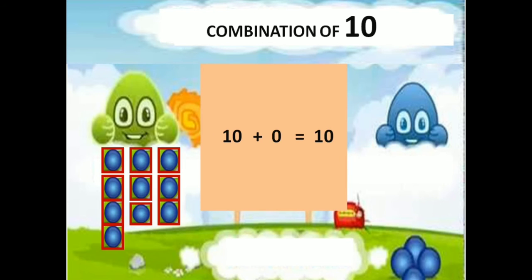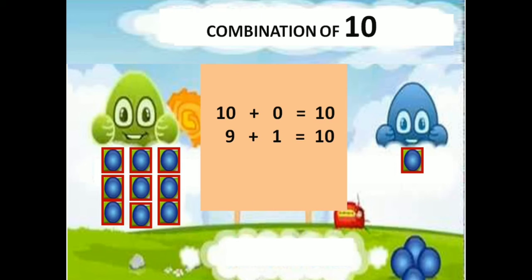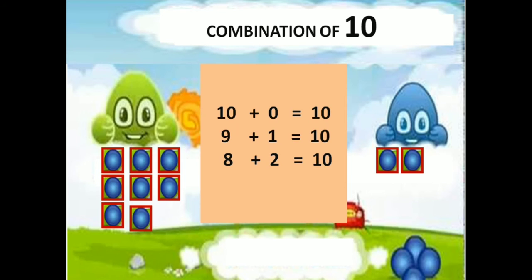First, green doll having 10 balls, blue doll having 0 balls — 10 plus 0 equals 10. Next, green doll having 9 balls, blue doll having 1 ball — 9 plus 1 equals 10.